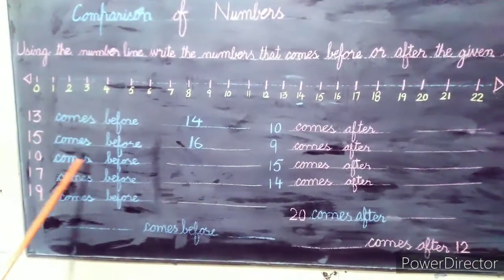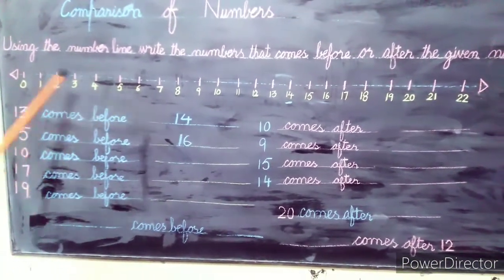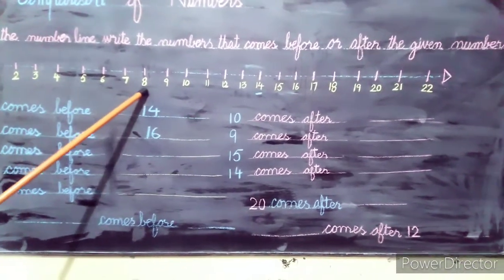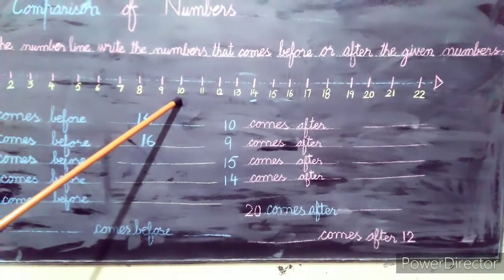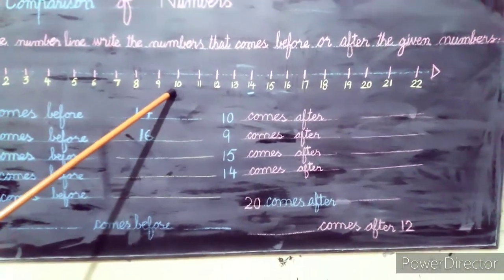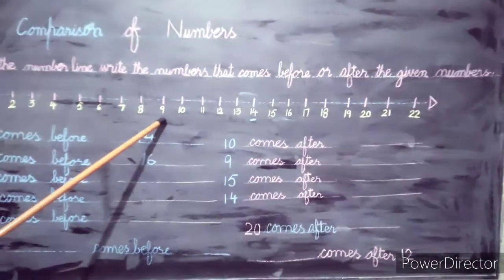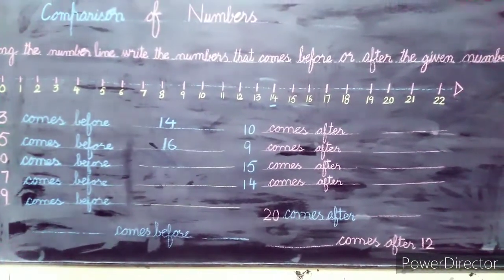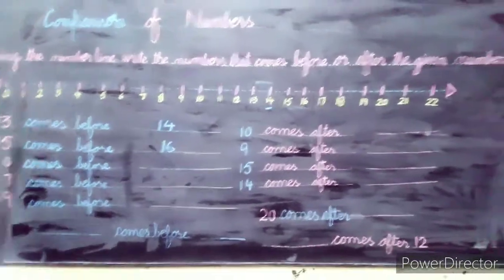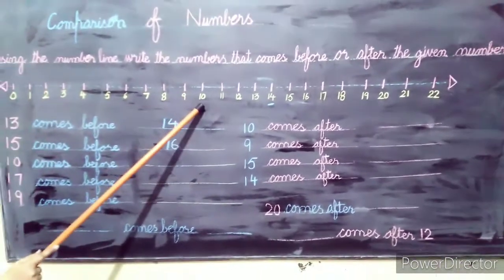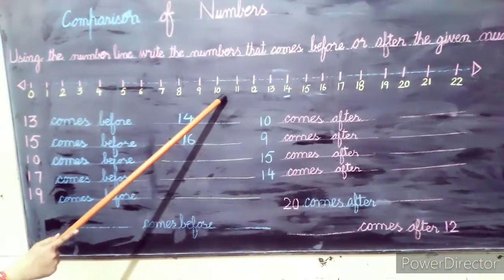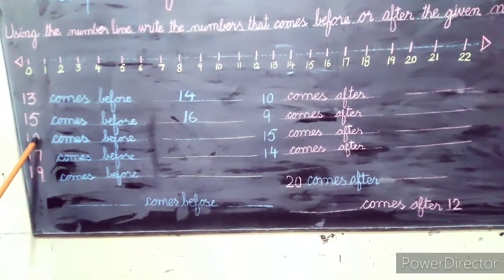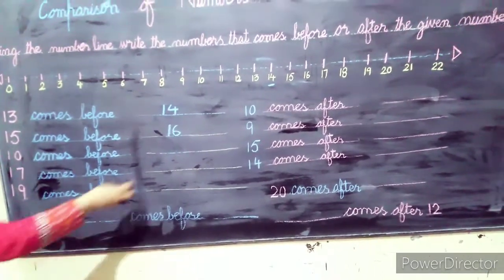Next, 10 comes before. Let's count: 1, 2, 3, 4, 5, 6, 7, 8, 9, 10. From the number line, 9 comes before 10, and 11 comes after 10. So 10 comes before 11.